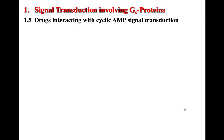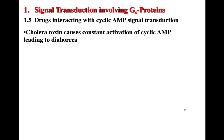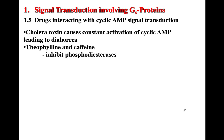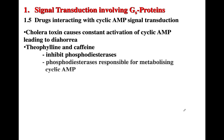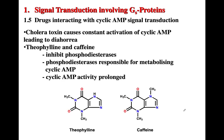There are some drugs that interact with cyclic AMP signal transduction. Cholera toxin, for instance, causes constant activation of cyclic AMP, which leads to diarrhea. Theophylline and caffeine cause inhibition of phosphodiesterases. Phosphodiesterases are responsible for metabolizing cyclic AMP, so inhibiting them leads to increased activity of cyclic AMP. Theophylline and caffeine are two substances that interact with cyclic AMP signal transduction.